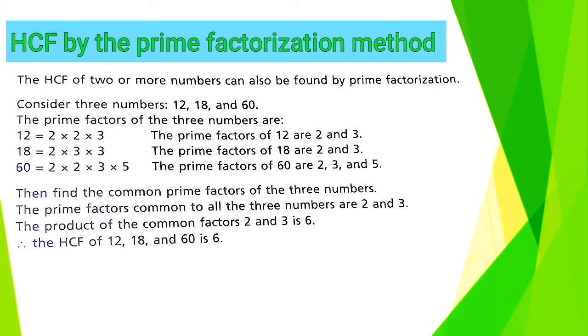First, we have to find out the Prime Factors of every given number, like 12, 18 and 60. After that, we have to separate Common Factors of each number, such as 2 and 3.